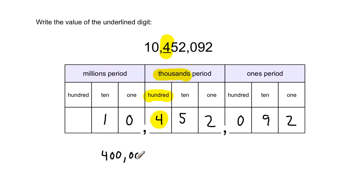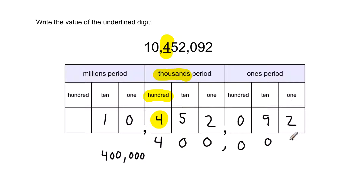The place it's in within the period is the hundreds spot, and the name of the period is thousands. So we start with the digit: four hundred thousands — that gives us 400,000. Another way you can use this place value chart is a little trick: write the digit right below, then for every place until the end of the chart, put a zero, adding a comma where needed. Either way, the value of this digit is 400,000.